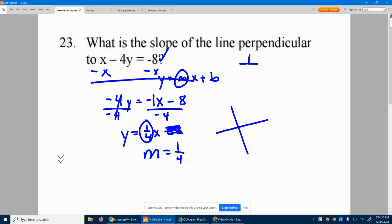So, it's the negated reciprocal. So the perpendicular slope will be negated, and the reciprocal of 1 fourth is 4. So negative 4 is our solution.